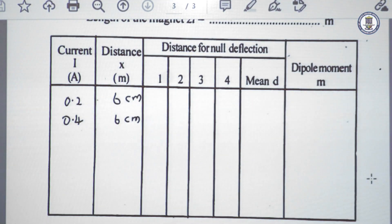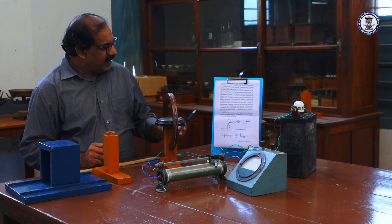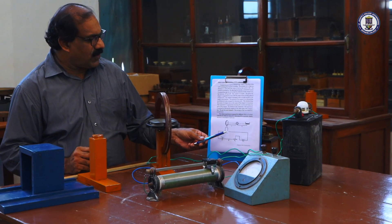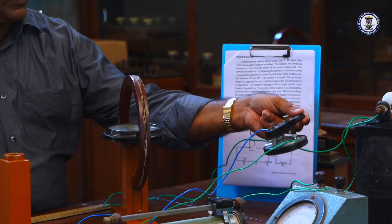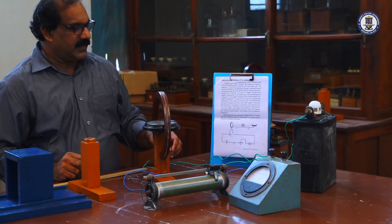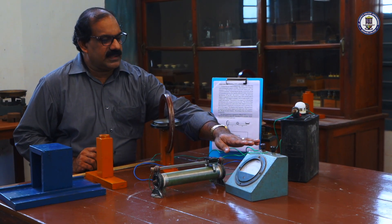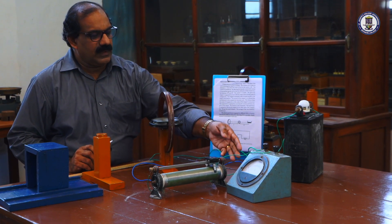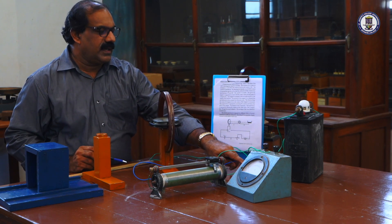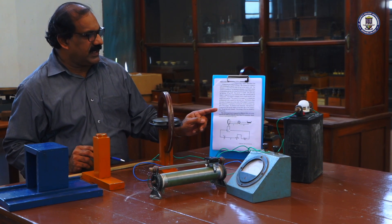For the experimental setup, the circular coil is included in the circuit with the help of a commutator, connected from its two opposite ends. A battery is connected through an ammeter to read the current, then through a rheostat to control current, and back through the commutator to complete the circuit.